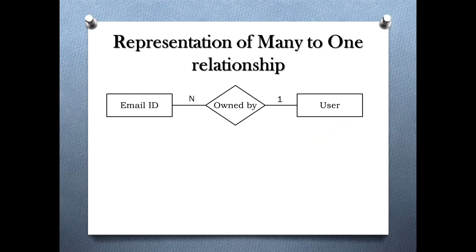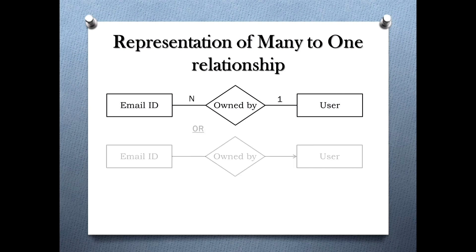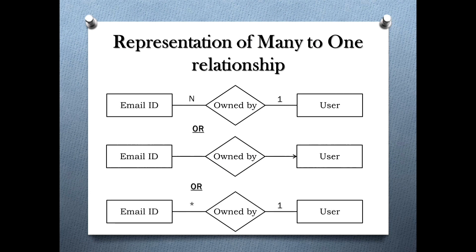Representation of many to one relationship: In an ER diagram, a many to one relationship can be represented either by writing 'n' and '1' on the respective sides of the relationship set, or by using an arrow on the side representing 1. Sometimes, an asterisk is used in place of n.